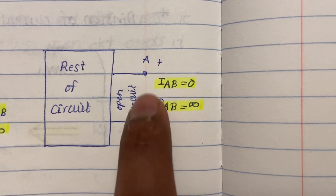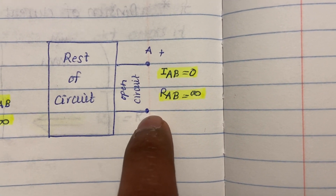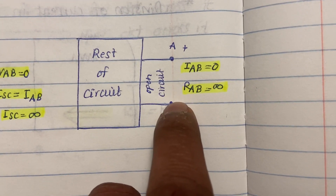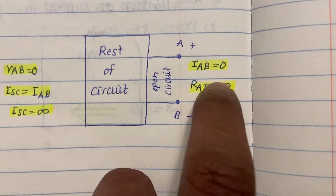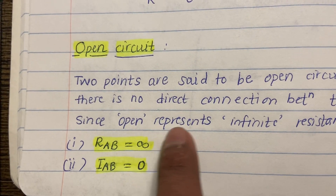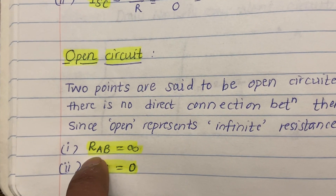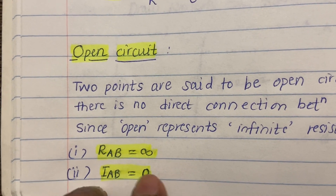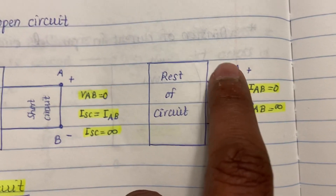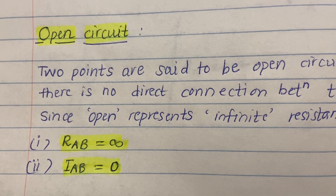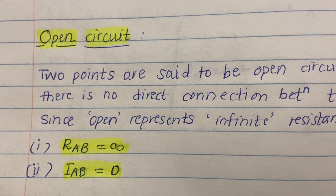Since it is open, there is no connection, so resistance equals infinity — theoretically. In the short circuit case, the theoretical resistance was zero. Here since it is open, resistance becomes infinity. If resistance is infinity and there is no connection, there will not be any current. Open circuit represents infinite resistance: resistance across points A and B is infinite, and current flowing through AB is zero because there is no path for current. In open circuit, current flowing through the terminals is zero.